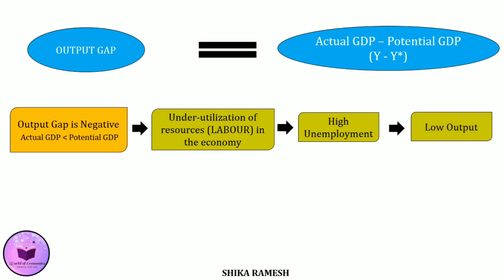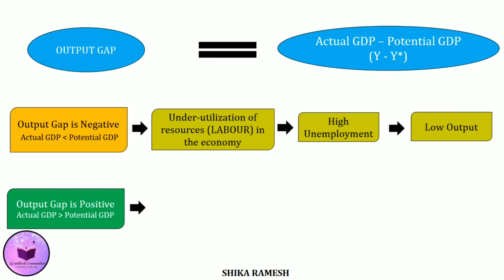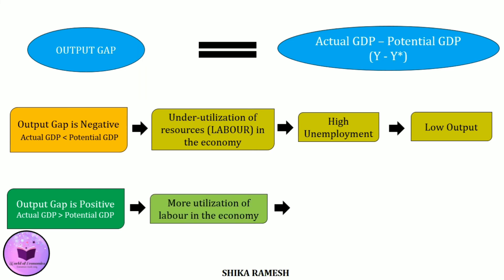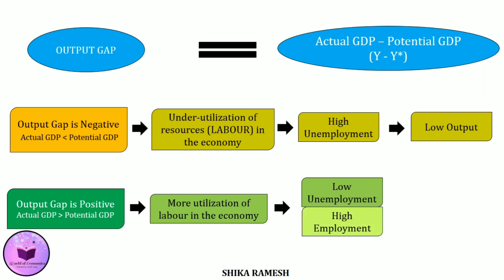And high unemployment leads to lesser production of output. On the other hand, if the output gap is positive — that is, if actual GDP is greater than the potential GDP — then it shows that the resources in the economy, especially the labor, are utilized excessively, because of which there is low unemployment. Or in other words, there is a high employment rate — more workers are employed. And when more workers are employed, they will contribute to a high level of output.